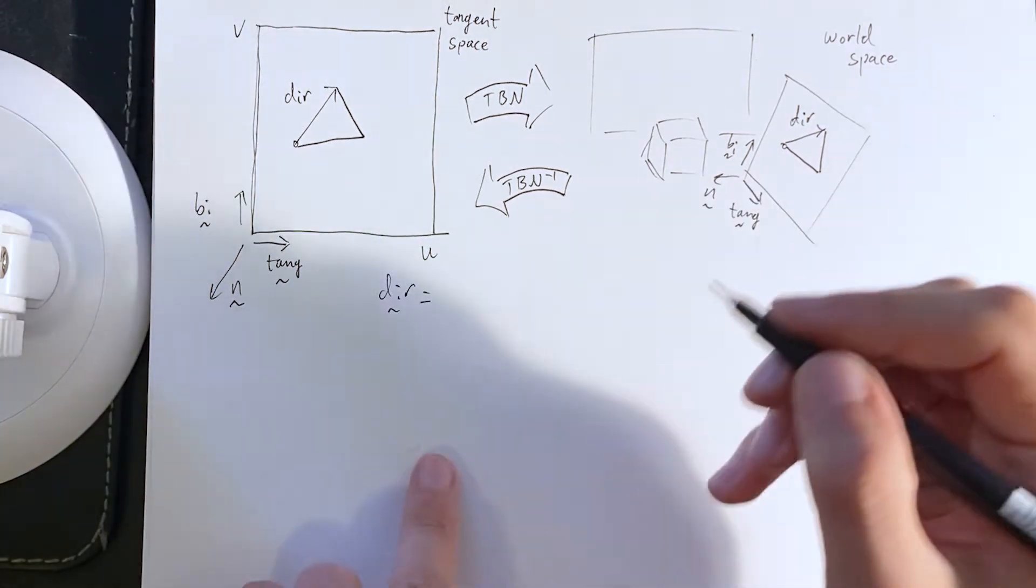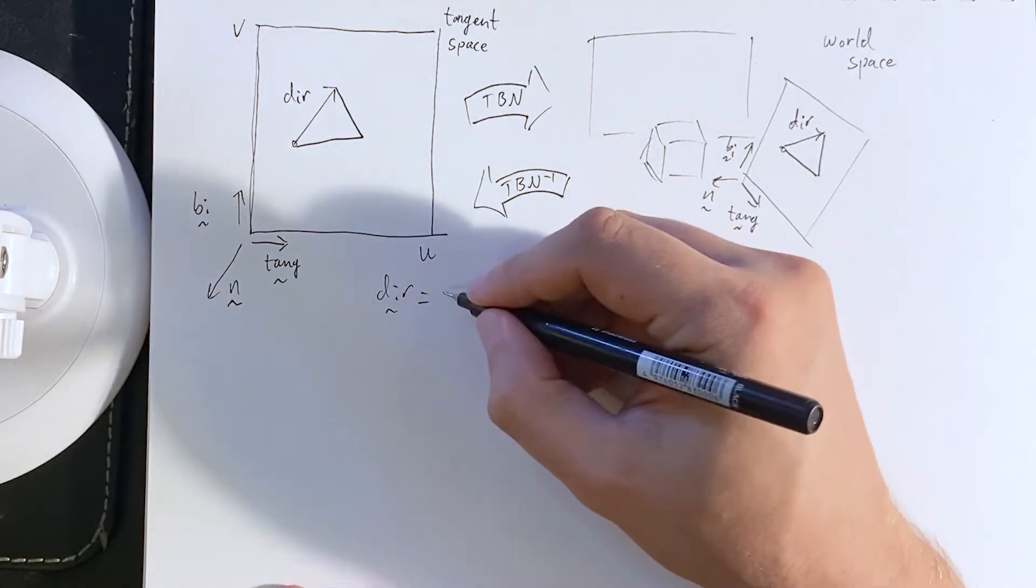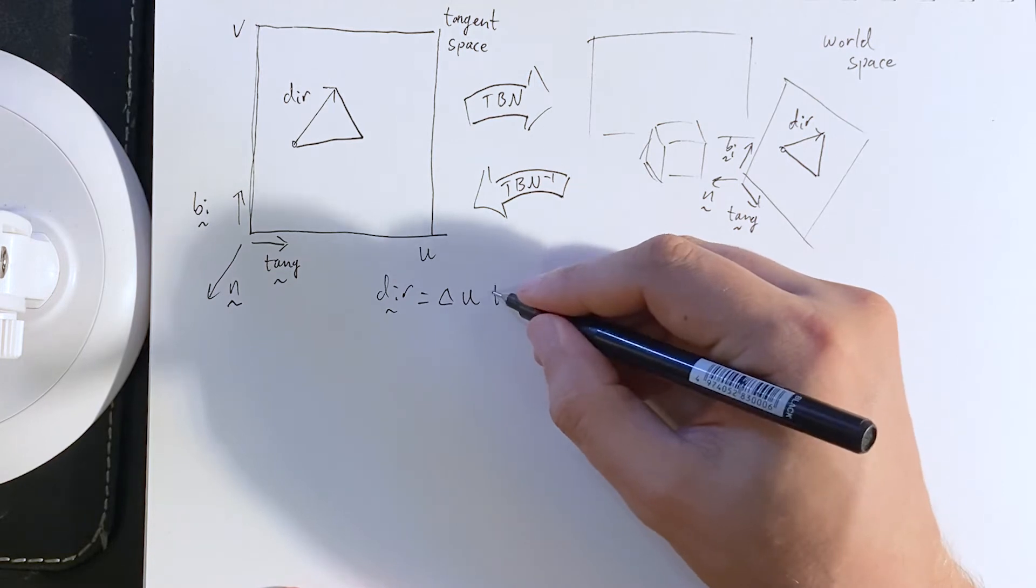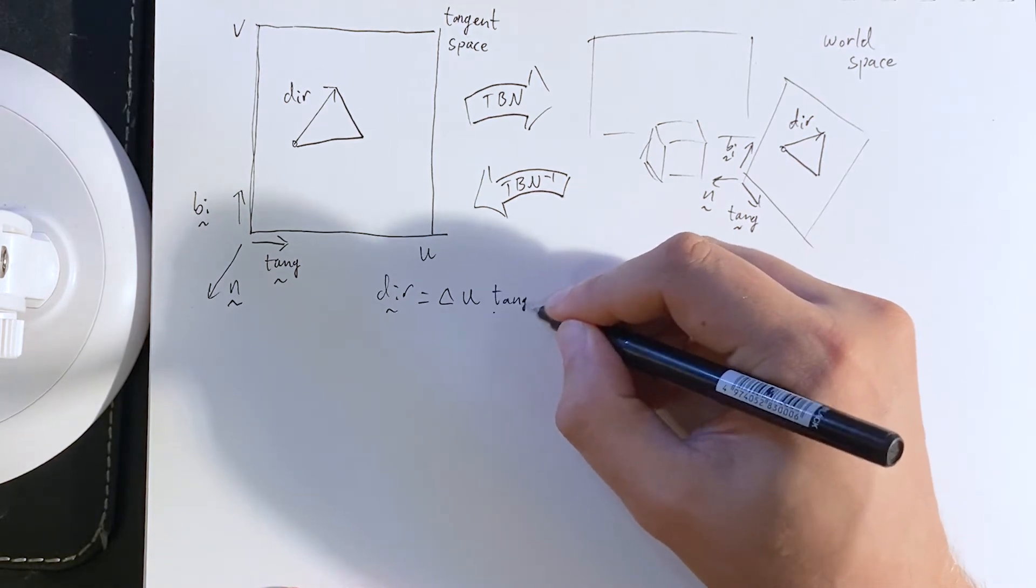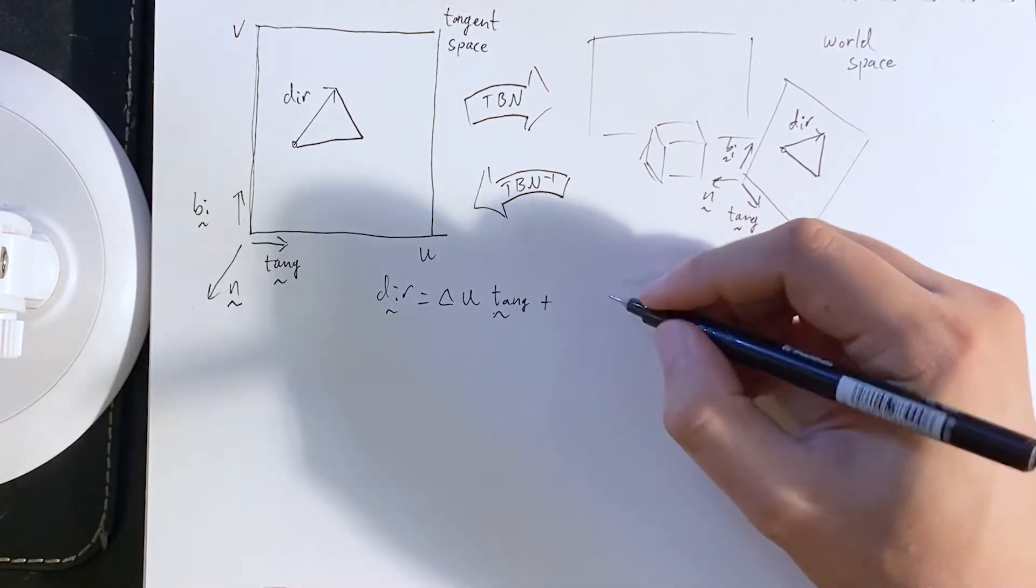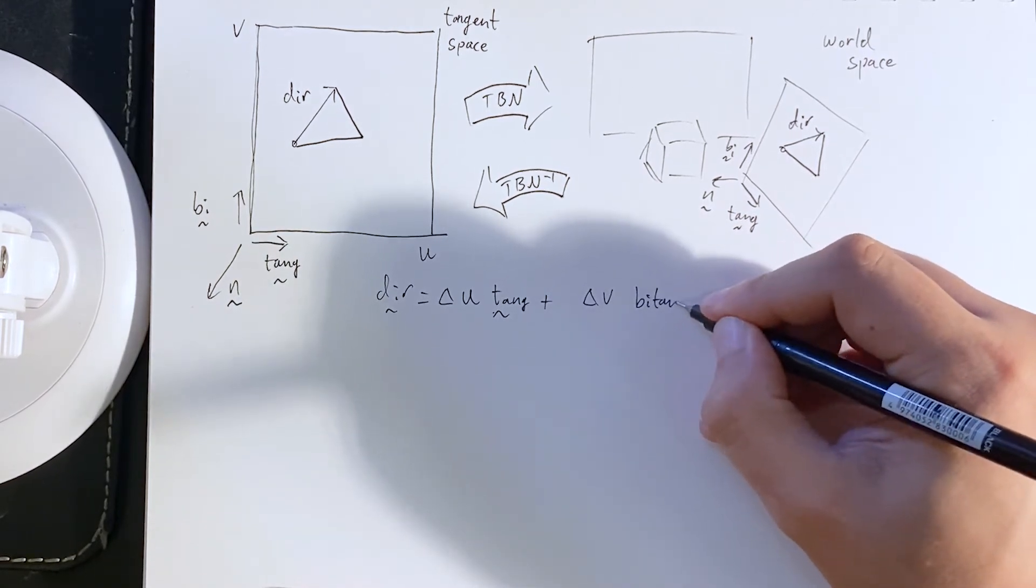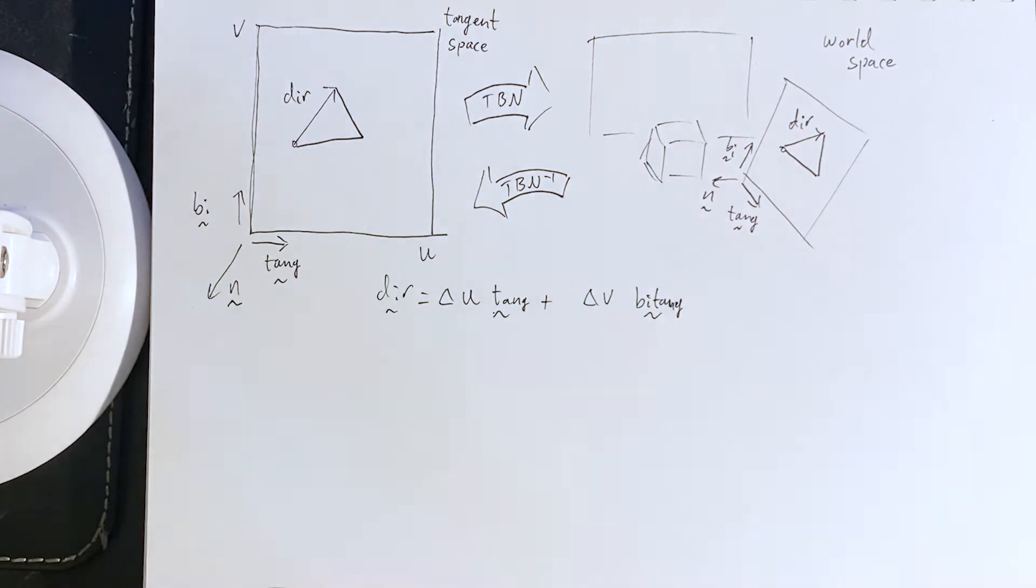Well, the direction is equal to, there will be a change in U coordinate times the tangent vector plus a change in V coordinate times the bitangent vector. Okay. Fair enough.